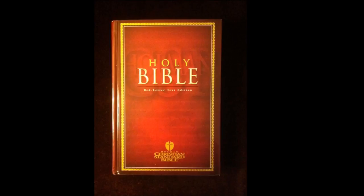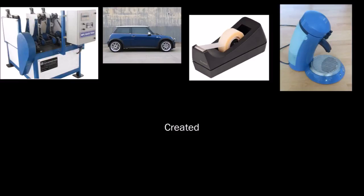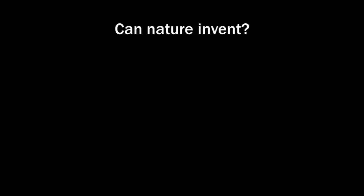This is the point where creationists usually start waving with a Bible. That's just not it. We know these three objects are not created, simply because we have the natural laws complete and we can observe these things forming without them being created. And we know these are created. We don't need a Bible to figure that out. So is there a way to tell whether or not this is created? Let's put it this way: can nature invent?